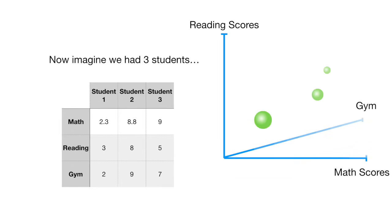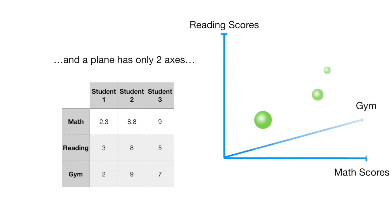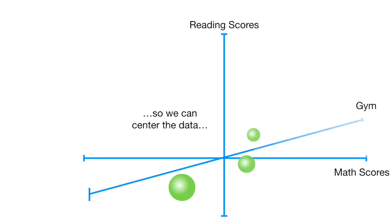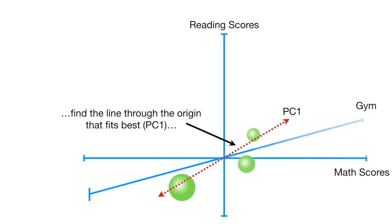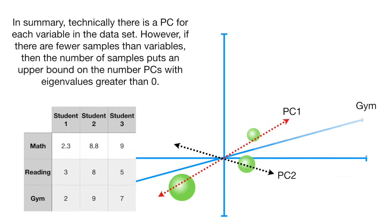Now imagine we had three students, and remember that three points define a plane, and a plane has only two axes. Then we would predict that there would only be two principal components. So we can center the data, find the line through the origin that fits best — PC1 — then find the line perpendicular to PC1 that fits best. And that's it. Since a third line would have an eigenvalue equal to 0, there's no PC3. In summary, technically there is a PC for each variable in the dataset. However, if there are fewer samples than variables, then the number of samples puts an upper bound on the number of PCs with eigenvalues greater than 0.